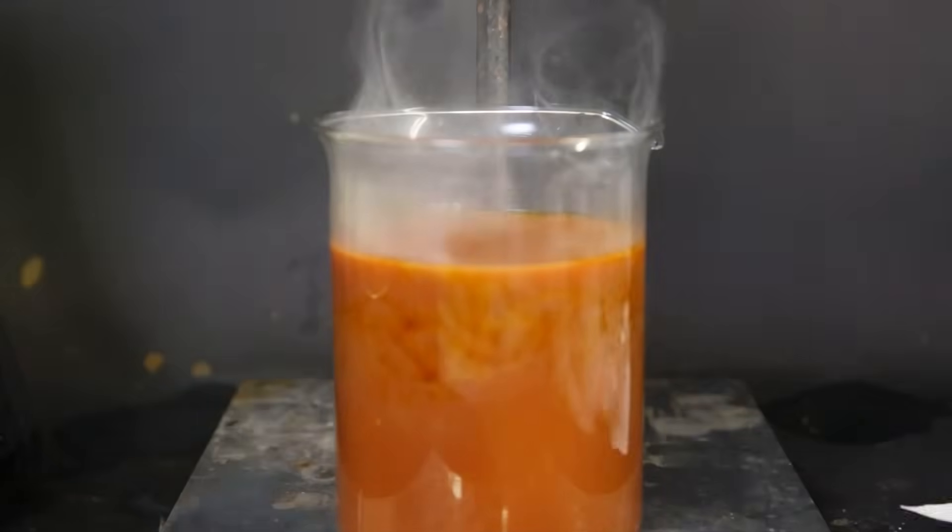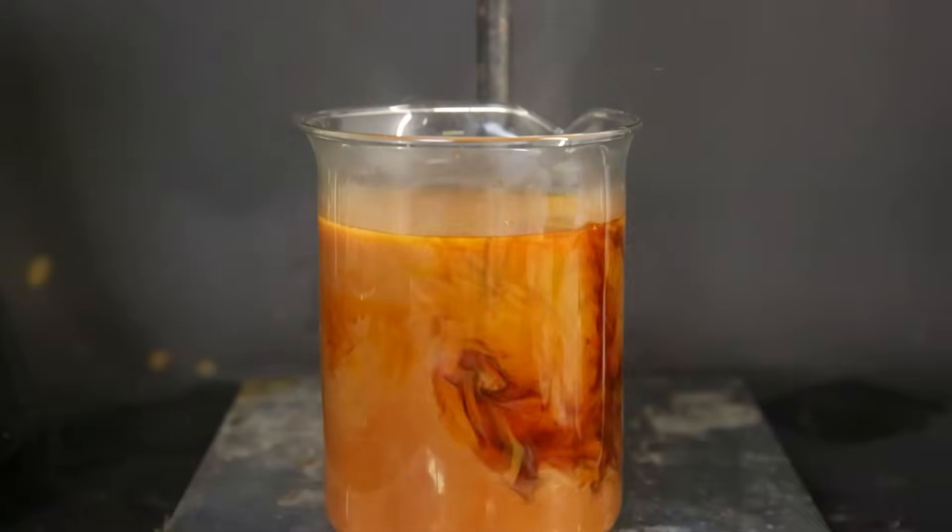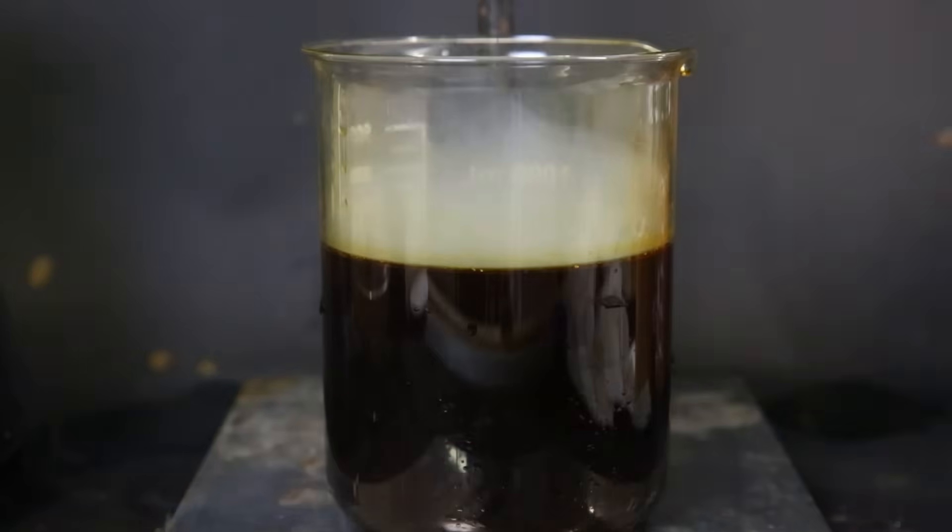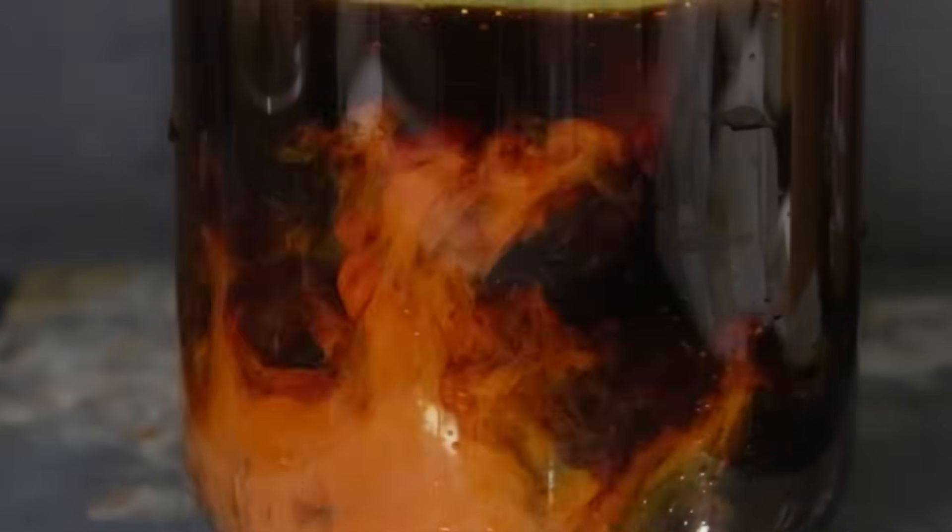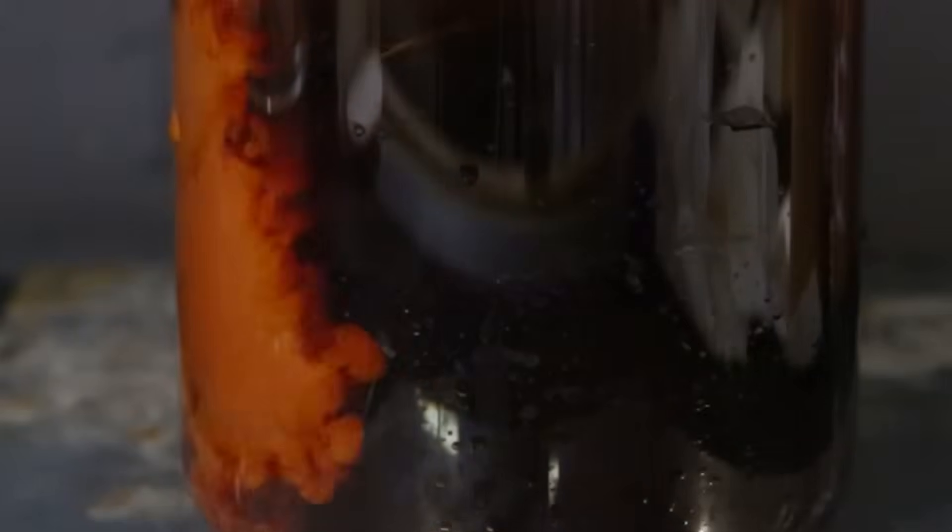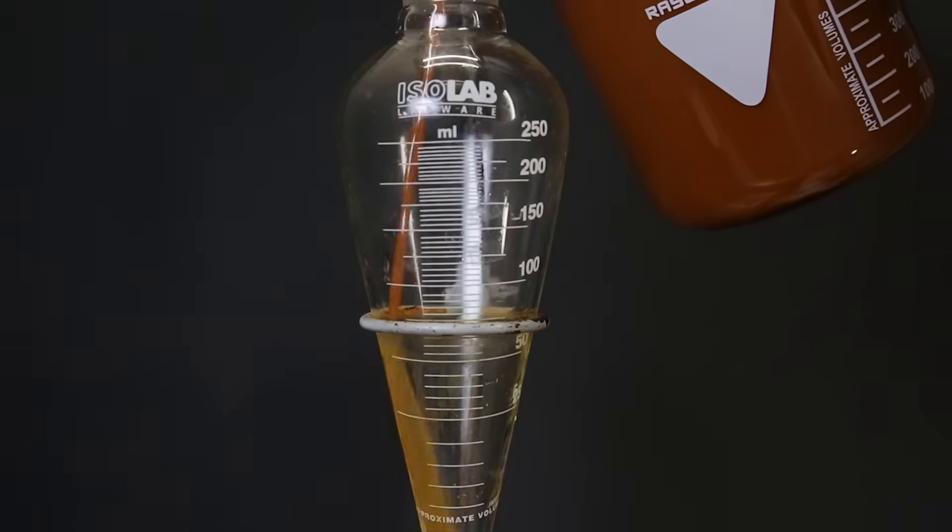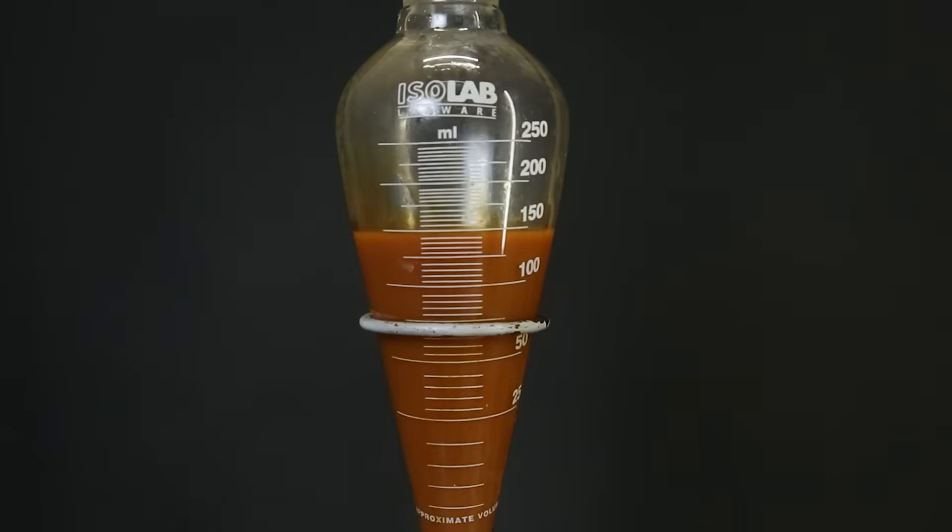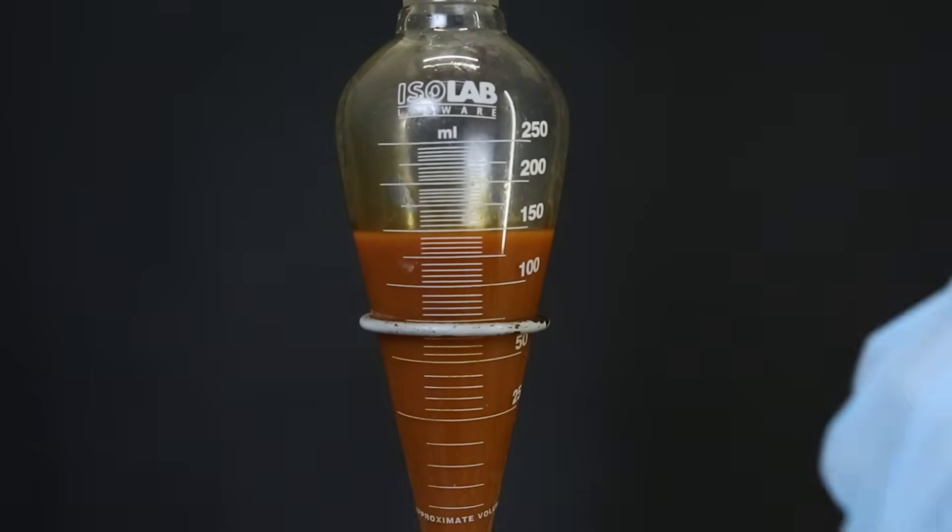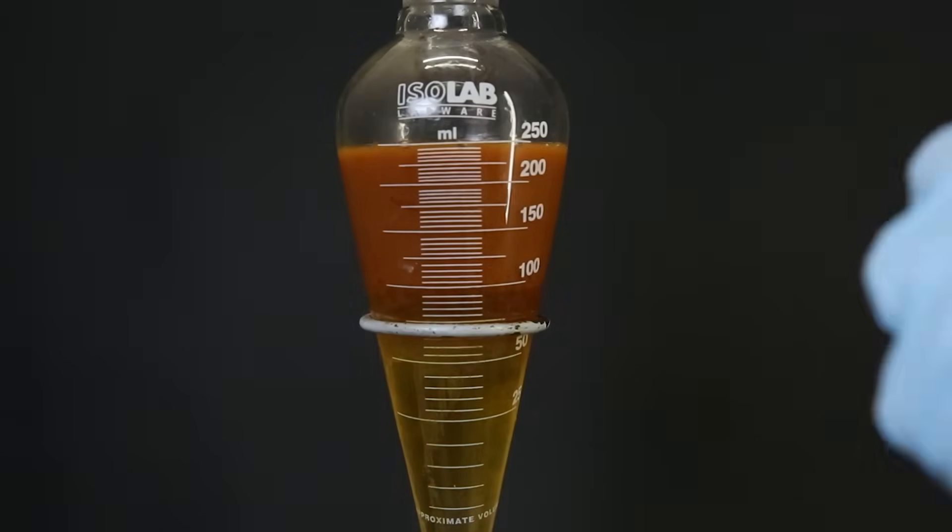Luckily it is easily visible and the solution turns orange. And somehow it is quite mesmerizing to look at. So I do this with all of the water layer. And then bring it to a separatory funnel and extract all of the acidified solution with some more DCM. The DCM should take up most of the remaining lignin oxidation products.